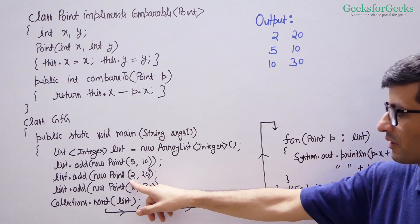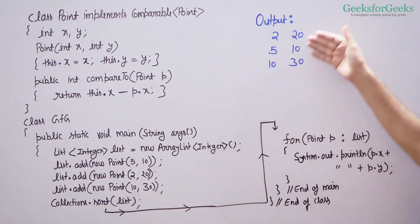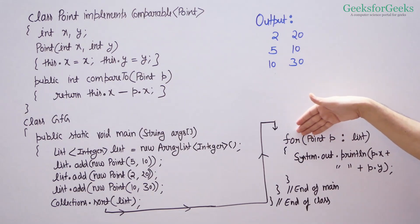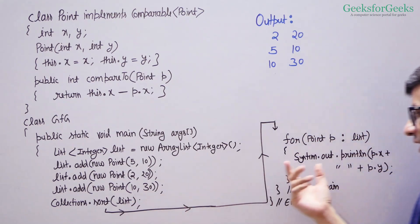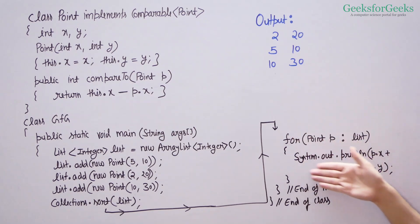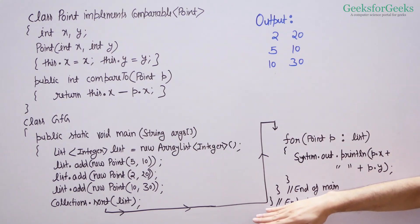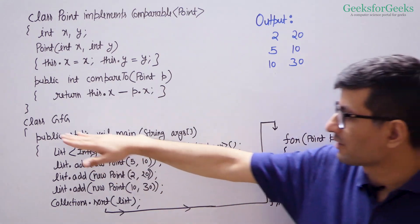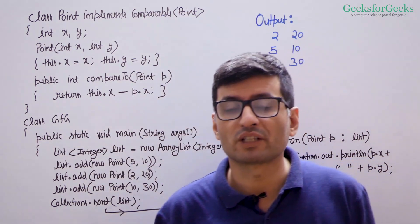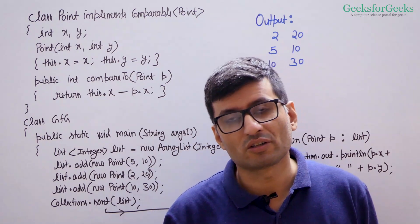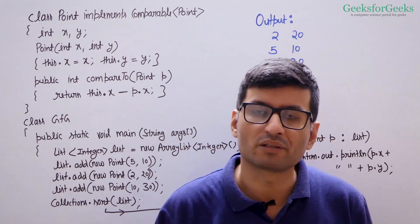The output order is because 2 has the smallest x coordinate value, then 5, then 10. That's why we get this output when printing the points after sorting. We sort the list first and then print it in a for loop. Then we have end of main and end of class GFG. This is an example of sorting a list where the data type implements the Comparable interface.